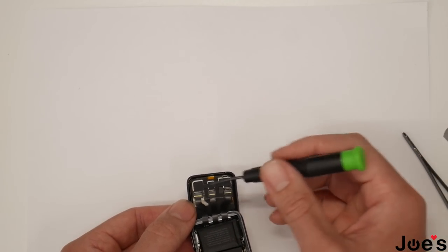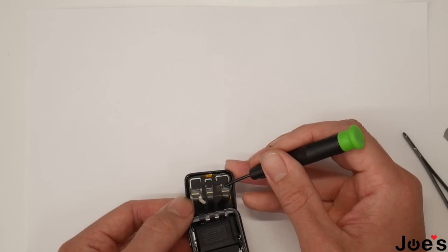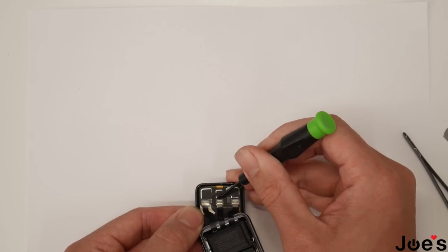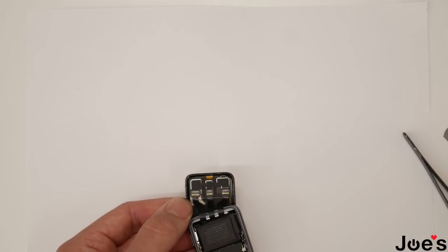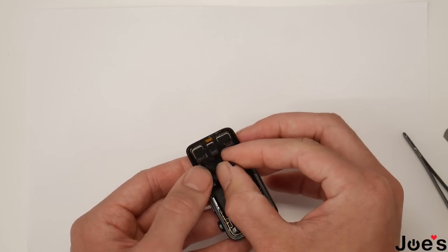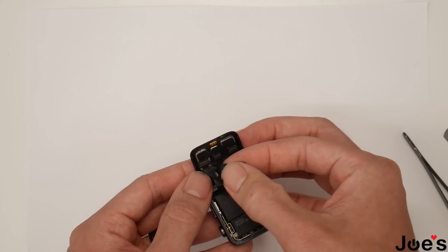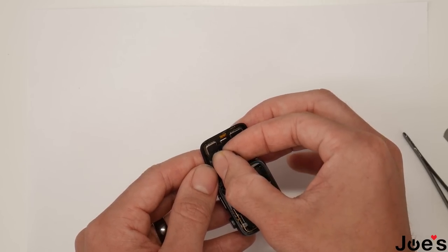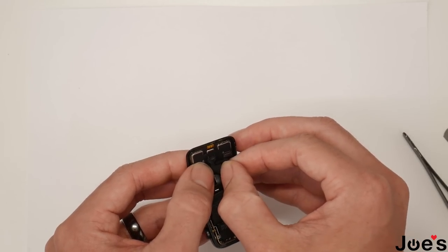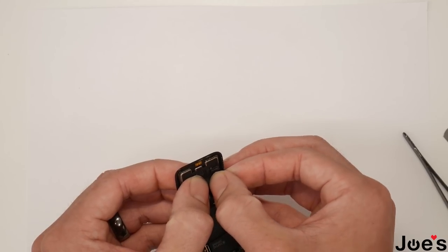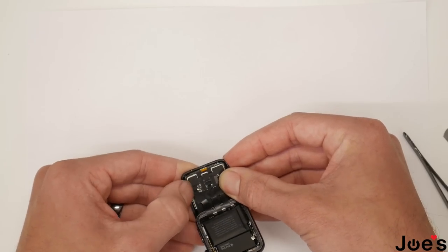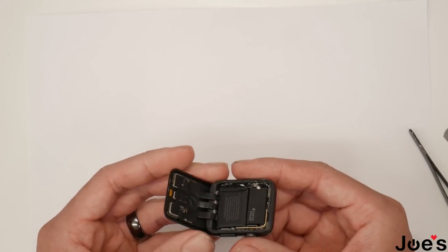All right, so after you got all the connectors in, you just want to close up all these clamps here so the connectors don't come out. You just pop it off and then take a piece of tape. You will simply want to cover up all your connectors again. Here we go.